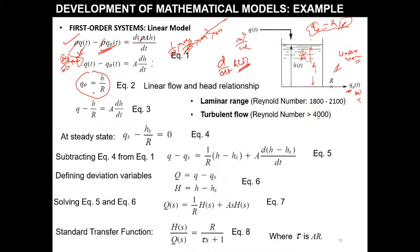Since this is a linear valve, Q_naught(H) equals H/R. Substituting this into the equation, it becomes Q minus H/R equals A·dH/dt.